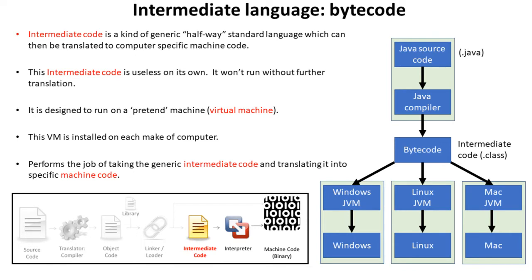This intermediate code is completely useless on its own. You won't be able to run it on any computer without some further translation step. It's designed to run on a kind of pretend machine which we call a virtual machine. These virtual machines are installed on each make of computer, and they perform the job of taking the generic intermediate code and translating it into specific machine code.